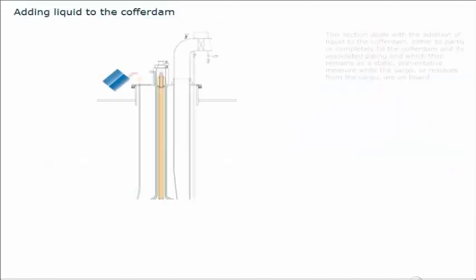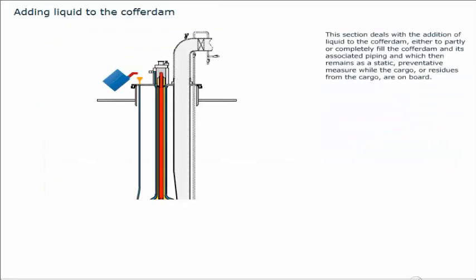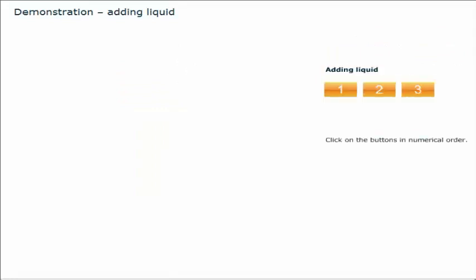This section deals with the addition of liquid to the cofferdam, either to partly or completely fill the cofferdam and its associated piping, which then remains as a static, preventative measure while the cargo, or residues from the cargo, are on board. You will now see a demonstration of the procedure to be followed when filling the cofferdam. Click on the buttons in numerical order.